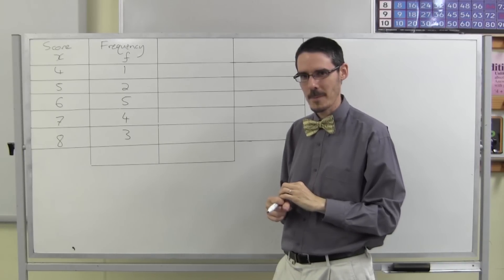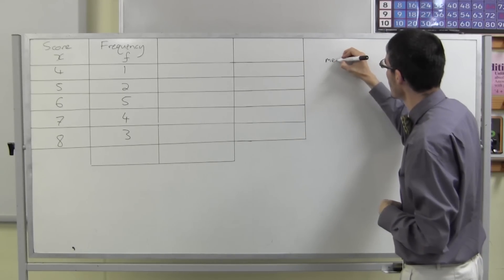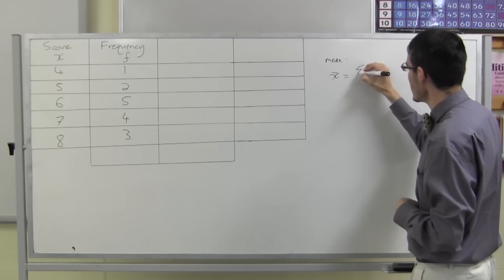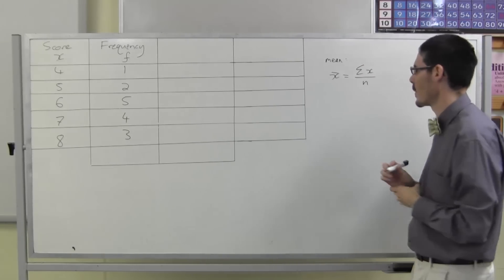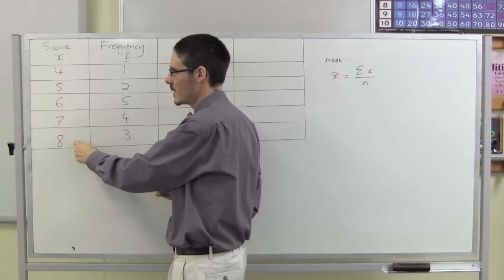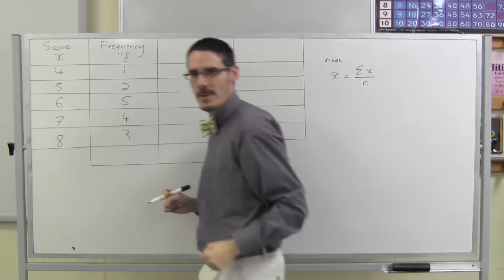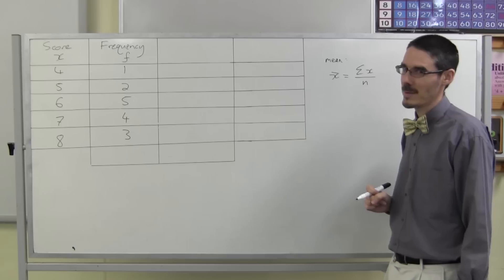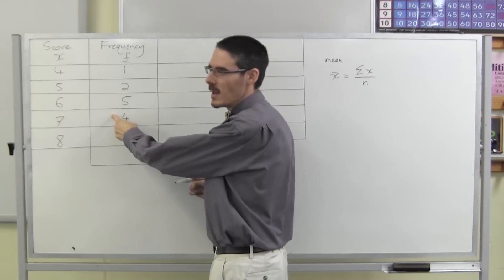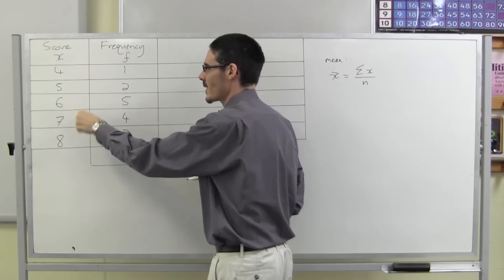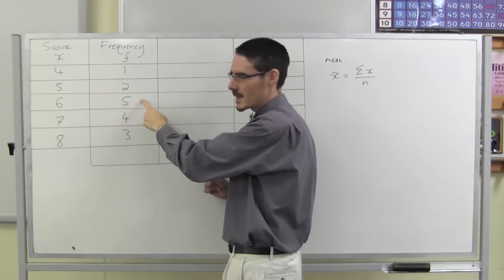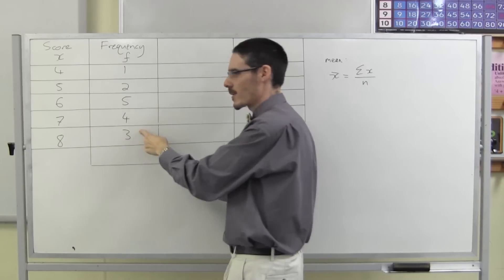But what about the mean? For the mean, my formula says x-bar equals the sum of the scores divided by the number of scores. So should I just go 4 plus 5 plus 6 plus 7 plus 8 divided by 5? Well, if I did, I'd be incorrect. Why? Because this is actually shorthand — it's not one of each, because there are actually two fives, five sixes, four sevens, and three eights.